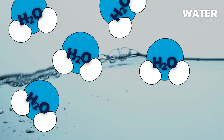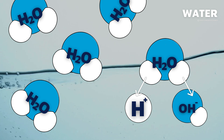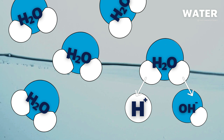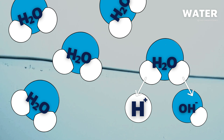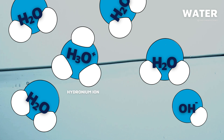In water, a small number of molecules will dissociate or split up. This means that some of the water molecules will lose a hydrogen and become hydroxide ions. The lost hydrogen ions don't just stay by themselves — they will join up with water molecules to form hydronium ions. We are just going to be looking at the balance between hydrogen ions and hydroxide ions in a substance to determine if it is acidic or basic and to what degree.